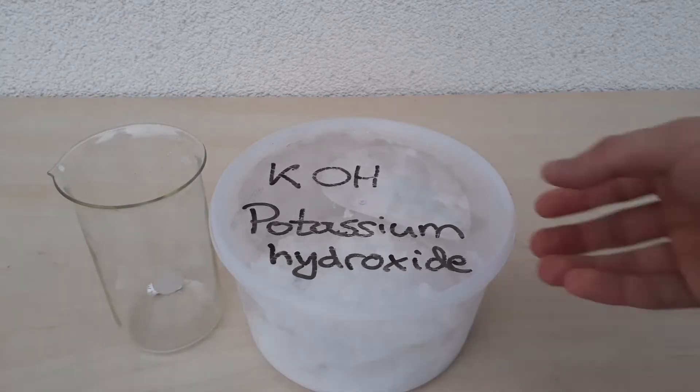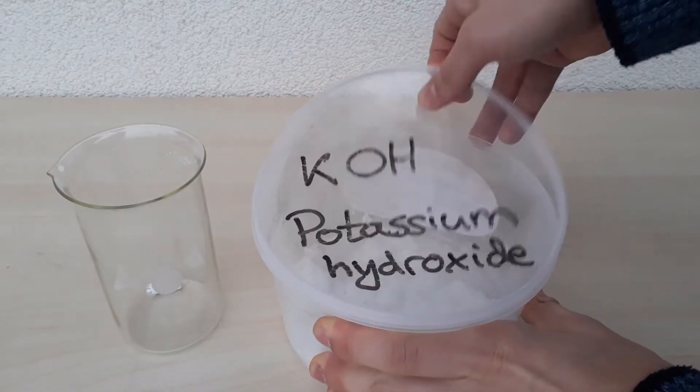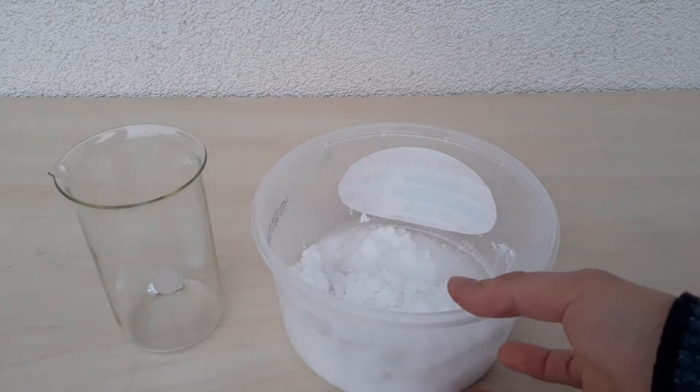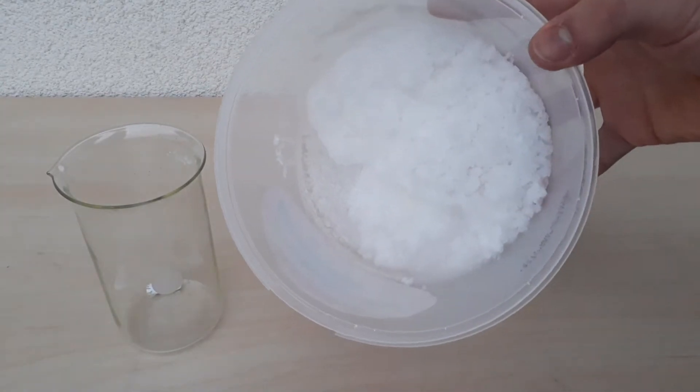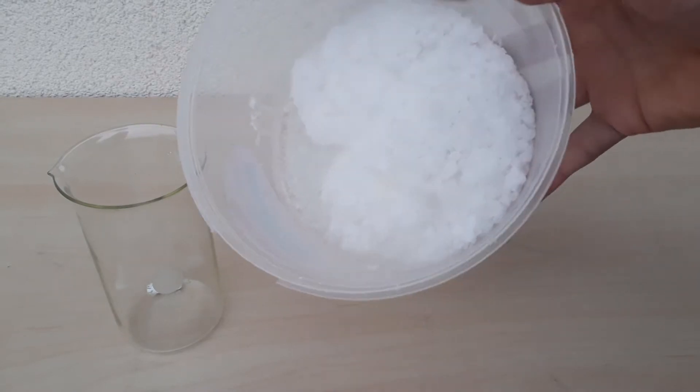Making potassium sulfate is really easy. I started off with this very hygroscopic potassium hydroxide, which I have neglected for so long that it started picking up excessive amounts of water from the air.